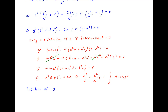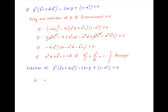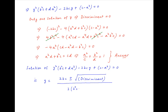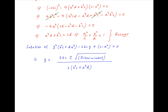Now we go back to the quadratic equation in y obtained above. This equation is y squared times, in brackets, b squared c plus da squared, minus 2bcy plus c minus a squared is equal to 0. Solving for y, we get 2bc plus or minus the square root of the discriminant of the above quadratic, divided by 2 times, in brackets, b squared c plus a squared d. Since the discriminant is equal to 0 for only one solution, the value of y is equal to bc upon b squared c plus a squared d.